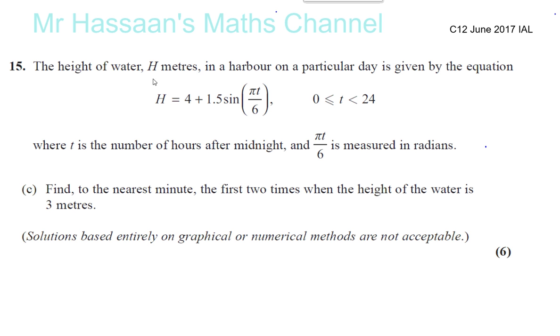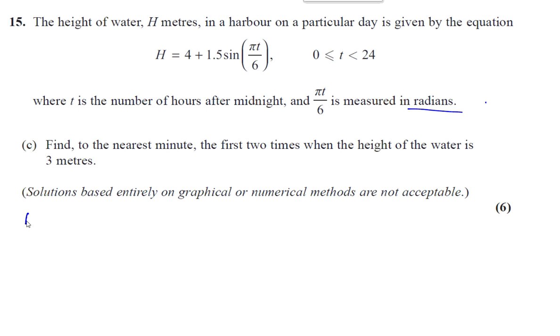The height of water h meters in a harbor on a particular day is given by the equation h equals 4 plus 1.5 sine of the angle pi t over 6, where t is the number of hours after midnight and pi t over 6 is measured in radians. Find to the nearest minute the first two times when the height of the water is 3 meters. So we've got to find when h is equal to 3. The sine curve continues on as a wave, so there will be multiple times when it reaches 3 meters in a day, but we're going to find the first two times.